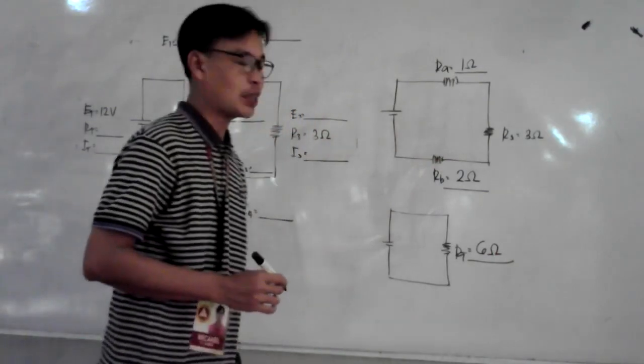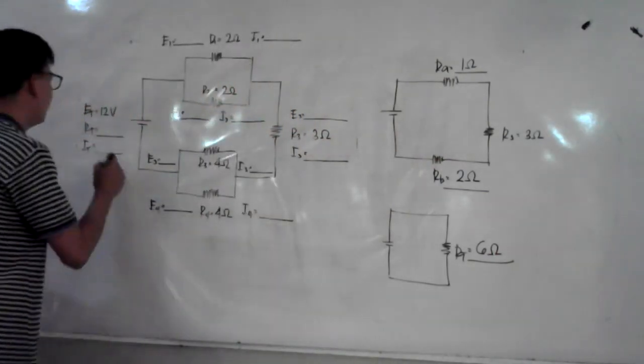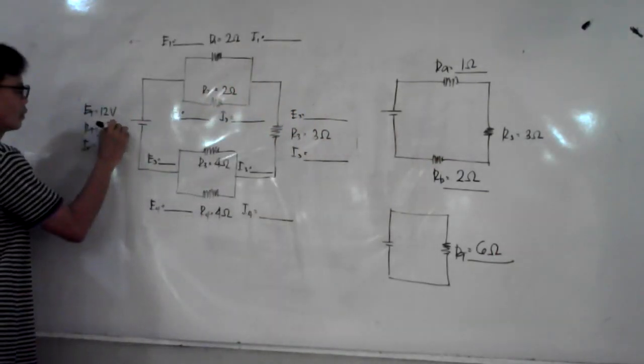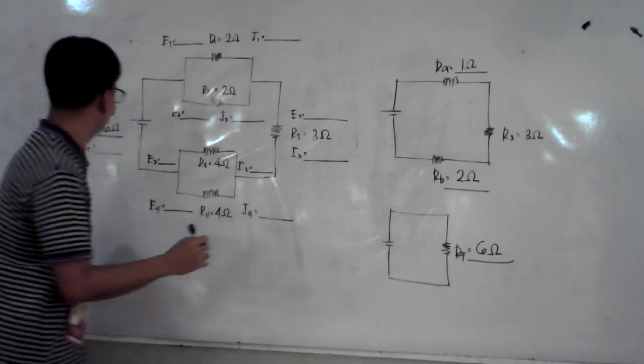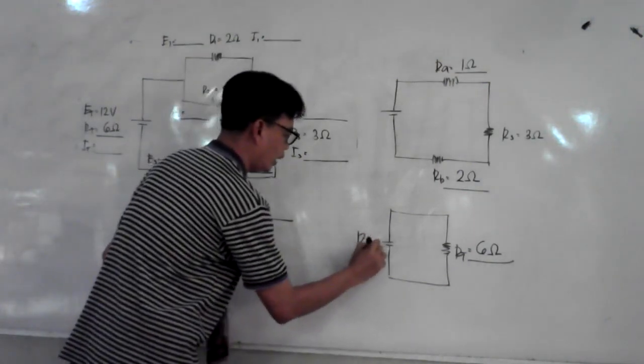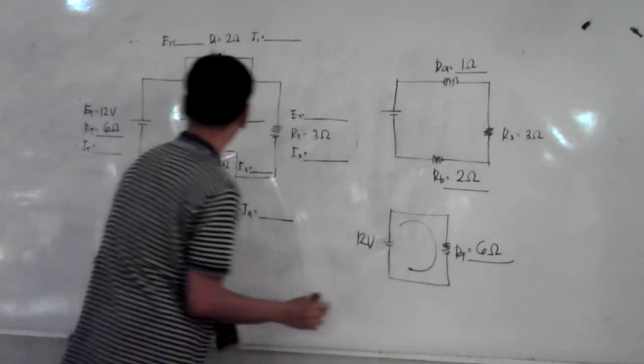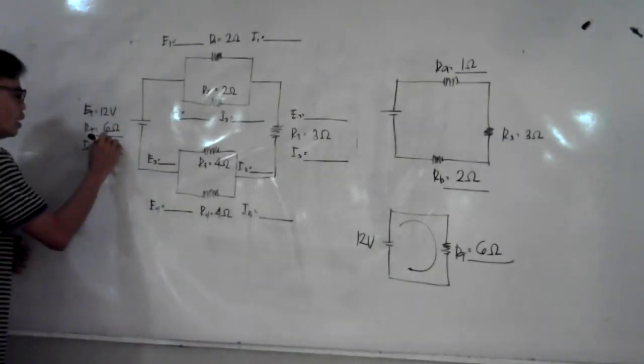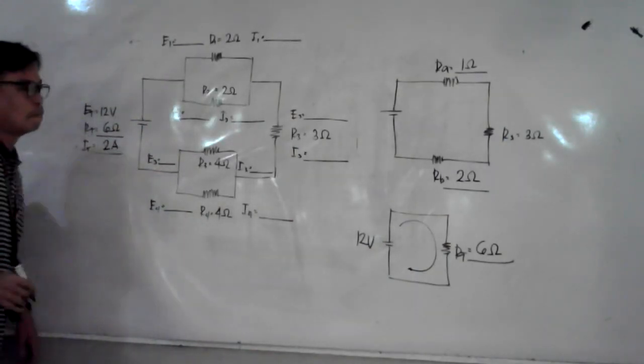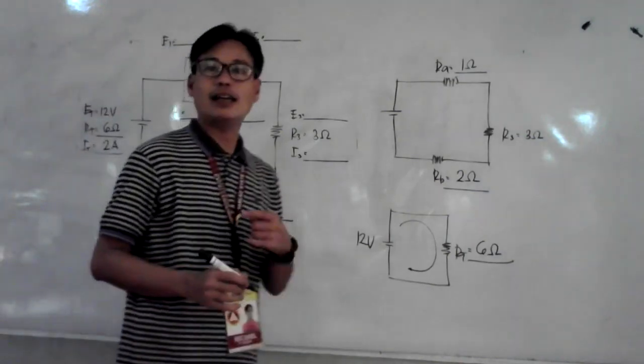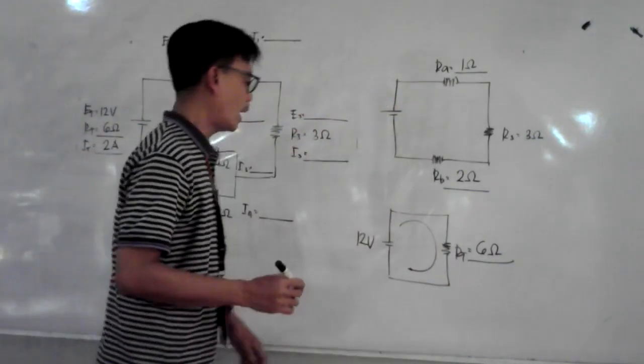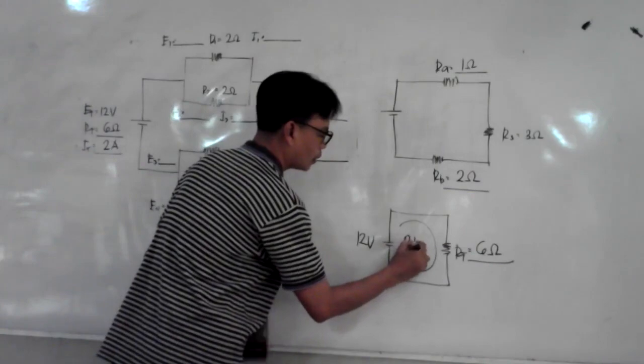We have 12 volts total voltage. Your current, of course, is equal to 12 divided by 6, so you have 2 amperes.